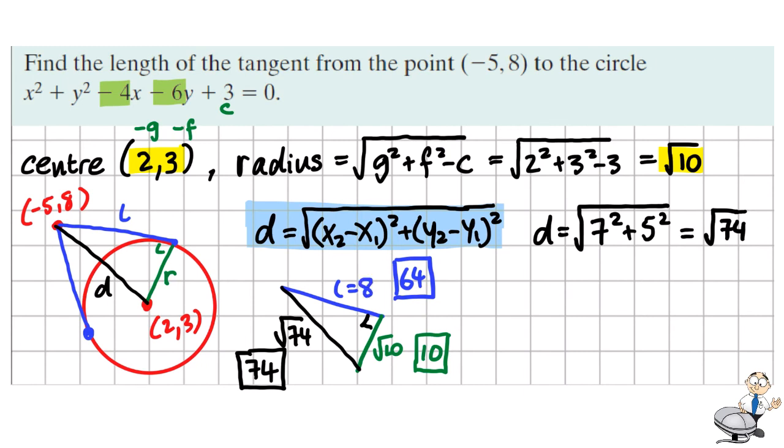And the square root of 64 is 8. So by solving this triangle using Pythagoras, we can see that the tangent length must be 8 units.